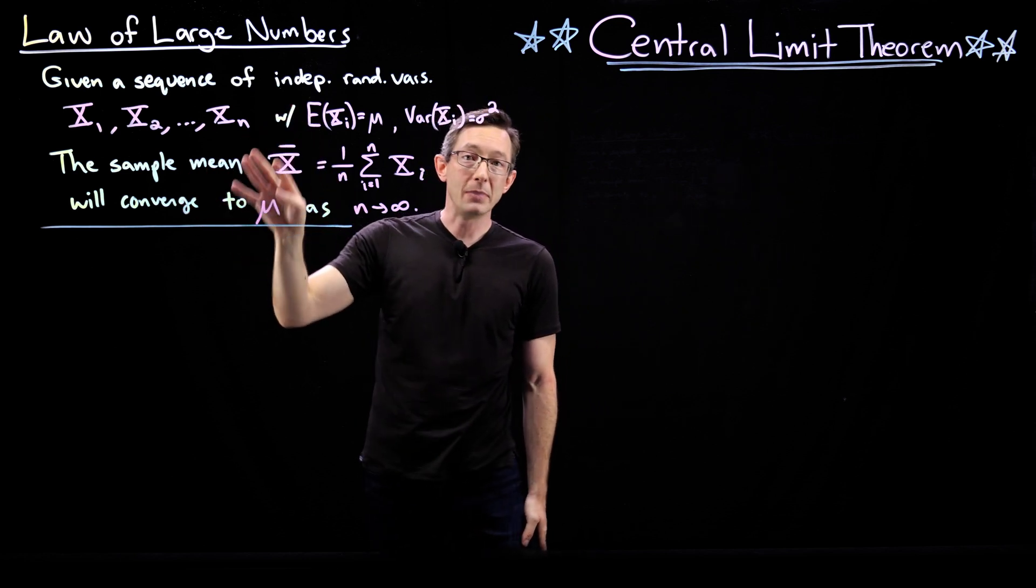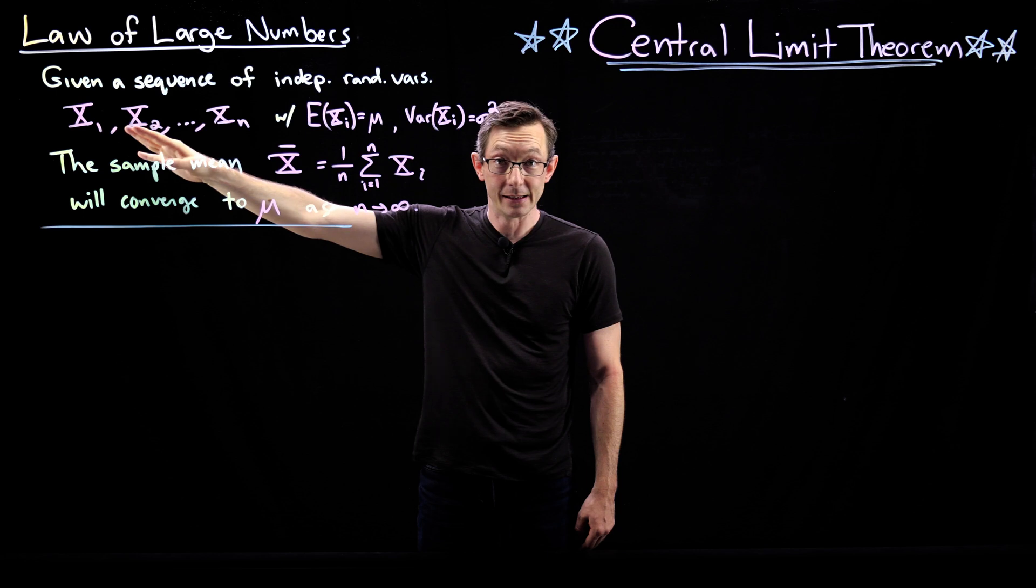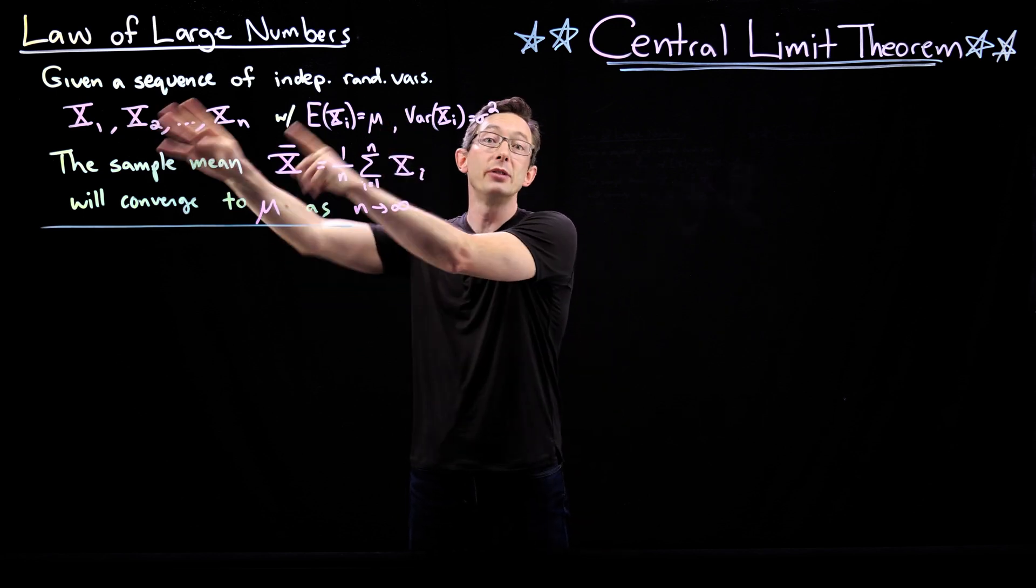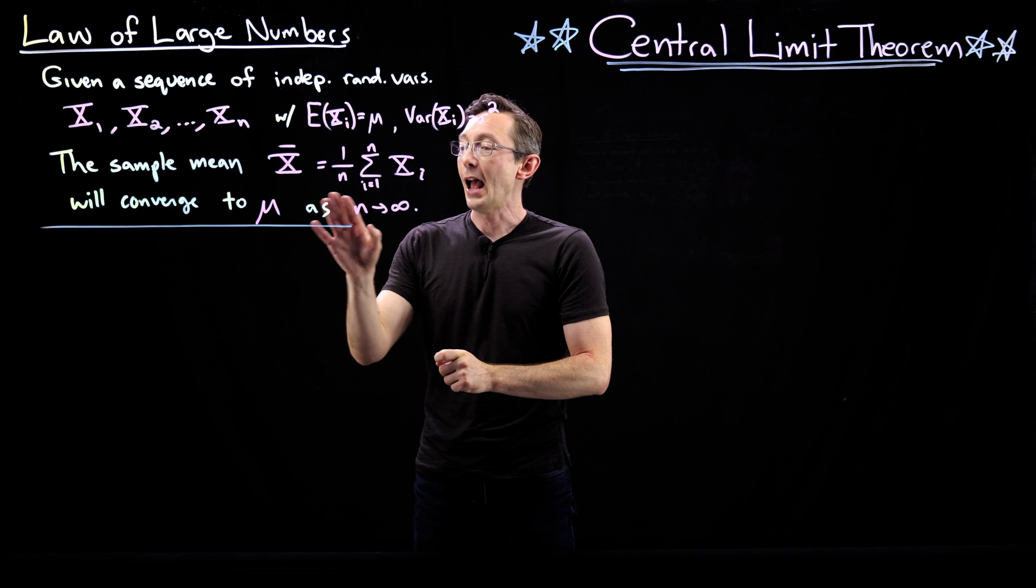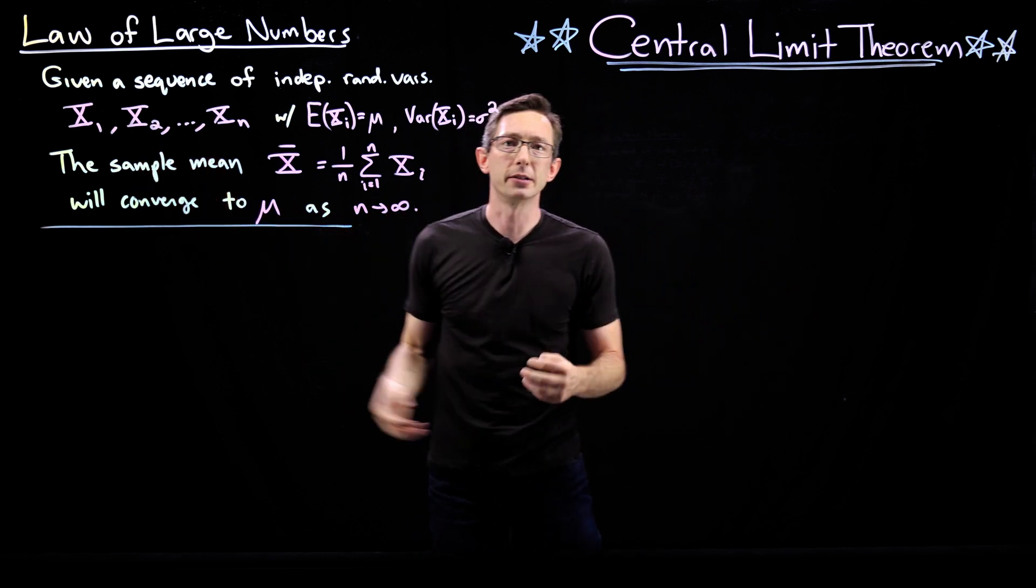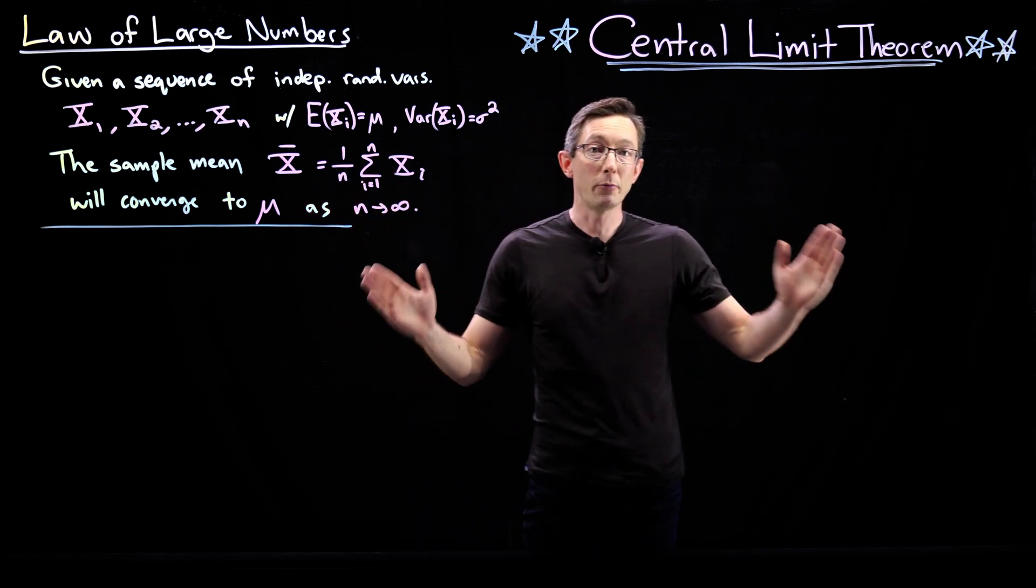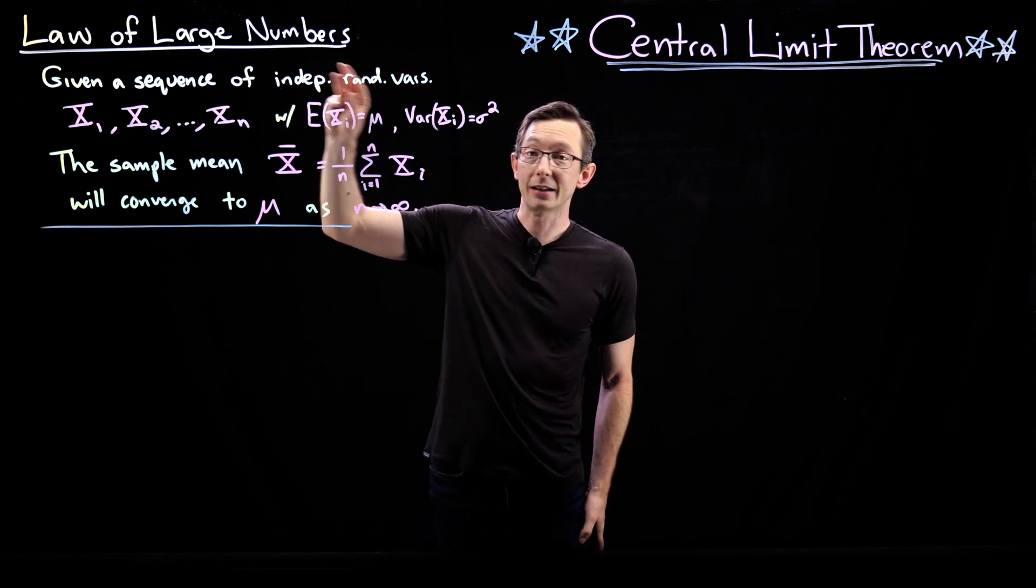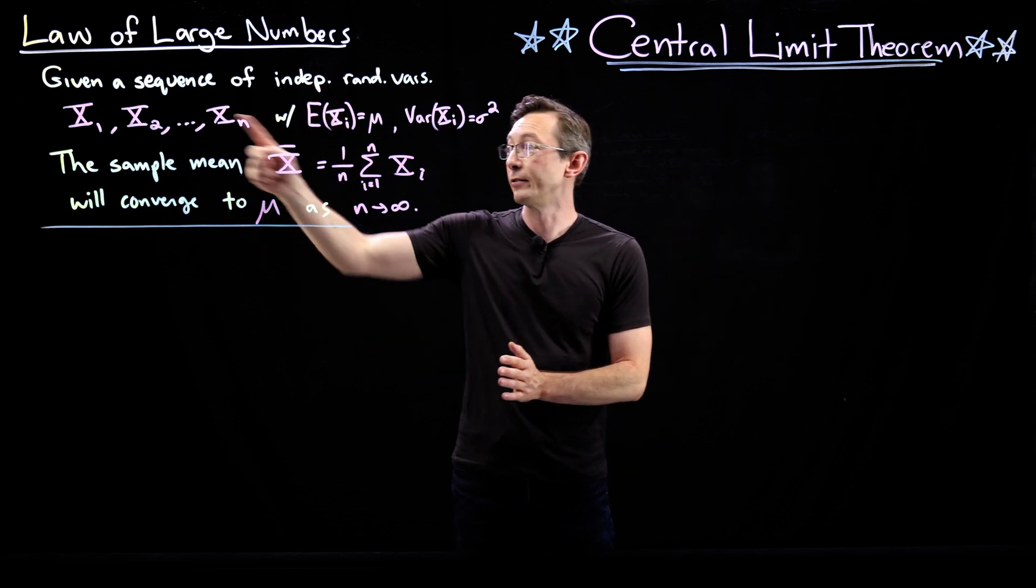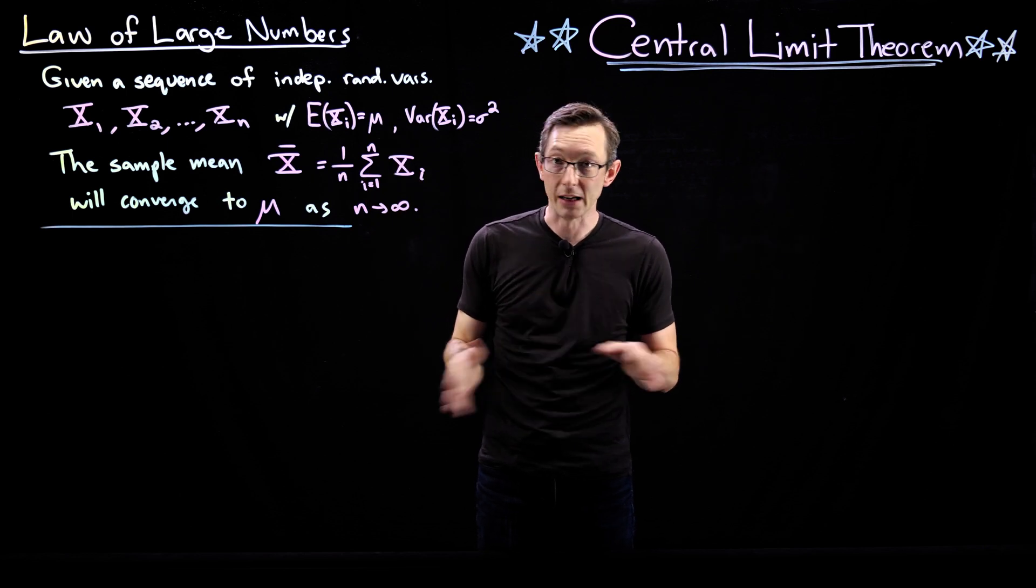Then the sample mean, literally the average, the numerical average of those n samples will converge to the mean of the distribution that they belong to as the number of samples goes to infinity. Very intuitive result. We have a gut feeling for why this is true. Okay, if I collect more and more data from identically distributed random variables and I average them, that average will converge to the expected value of that distribution. Makes total sense.